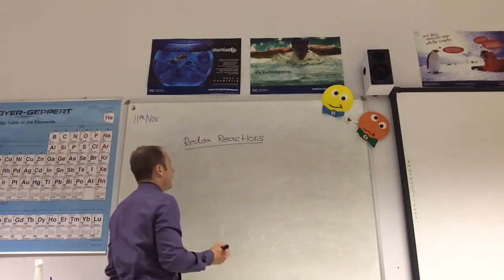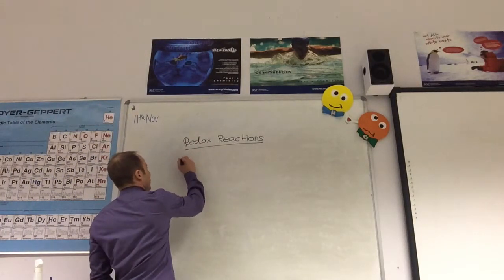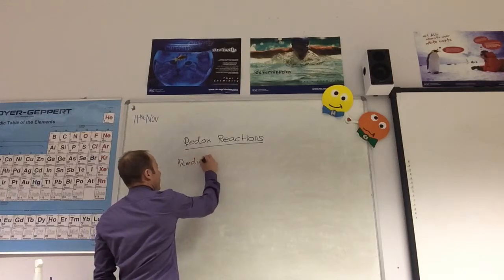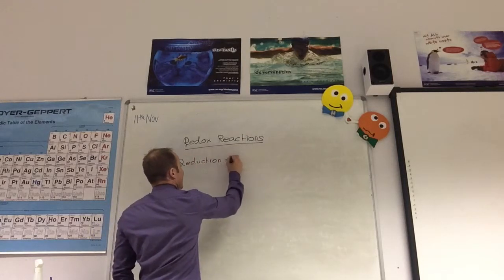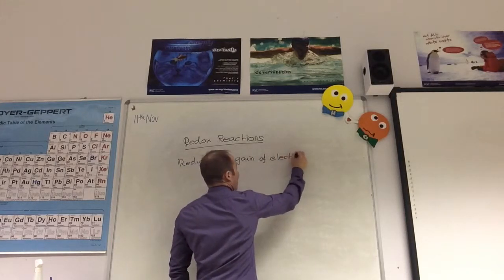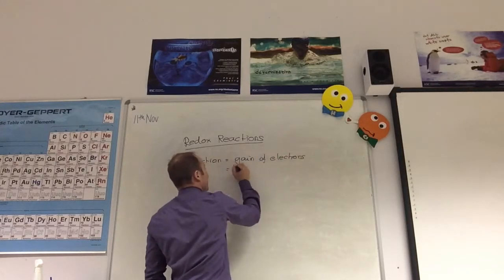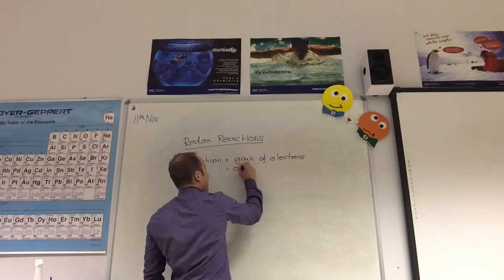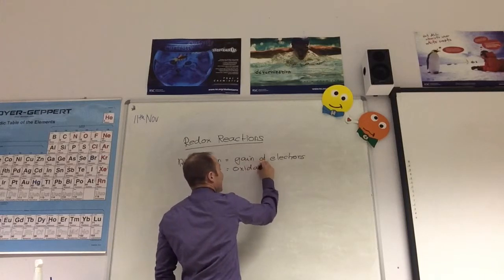In a redox reaction, you have oxidation and reduction. Reduction is equal to gain of electrons, but that's also saying that the oxidation number decreases.